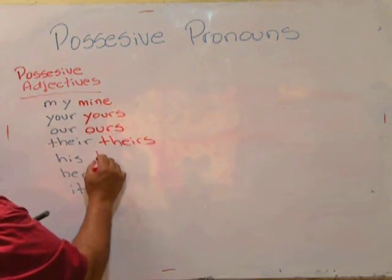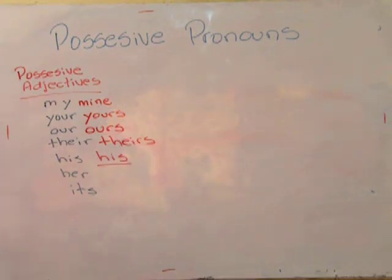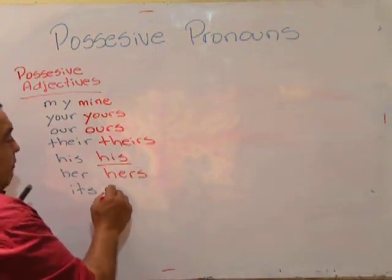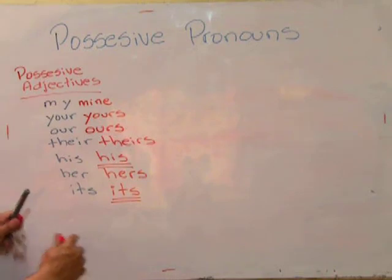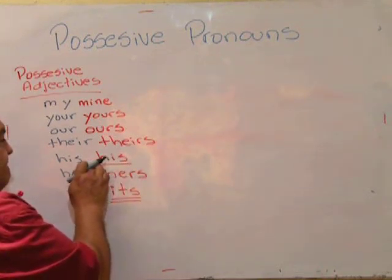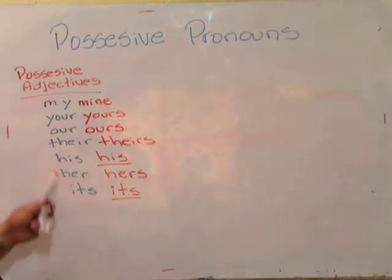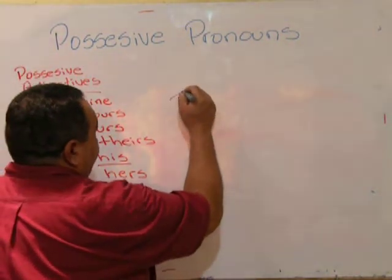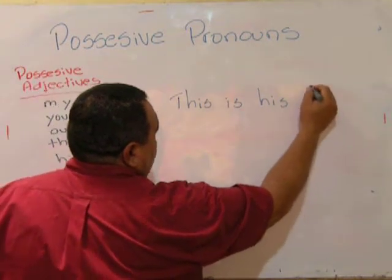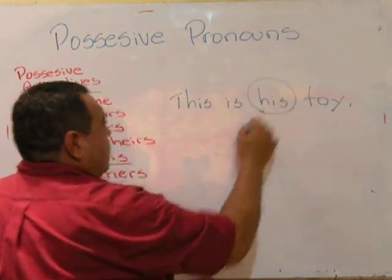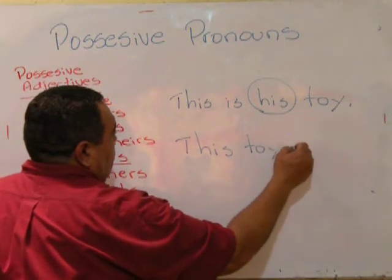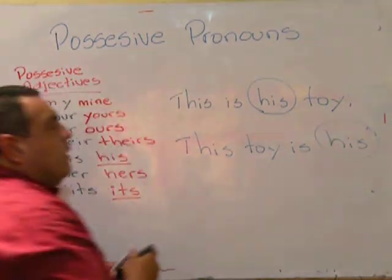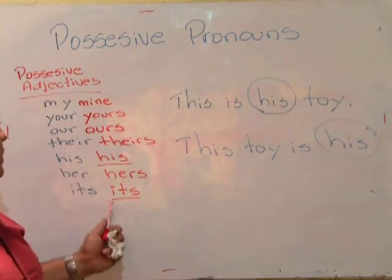For 'his,' the possessive pronoun stays the same: his and his. For 'her,' it becomes 'hers.' And for 'its,' it stays the same: its and its. These two stay the same. For example, this is his toy. This is his toy. Or, this toy is his. They don't change — only for 'mine' and 'yours' and the others we covered.